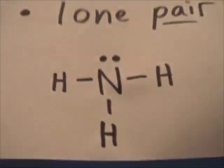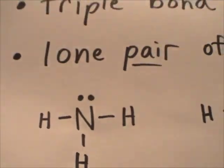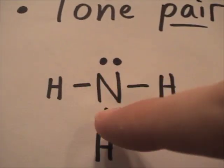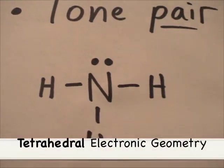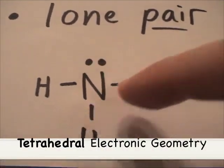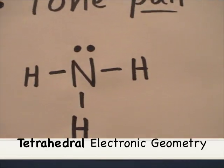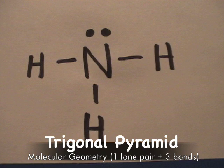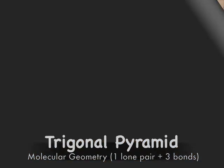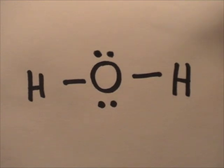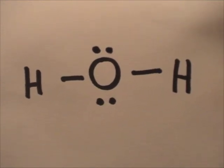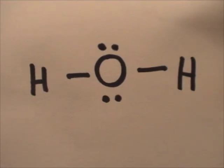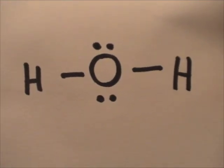Now let's look at ammonia. There are three single bonds and a lone pair of electrons, so there are one, two, three, four electron regions. Water has two lone pairs and two single bonds — one, two, three, four electron regions that will try to get as far away as possible.